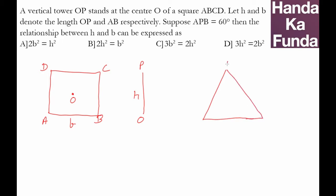So this is the top of the tower P, this is my side AB which is given to me in length as B, and this angle is given to me as 60 degrees.